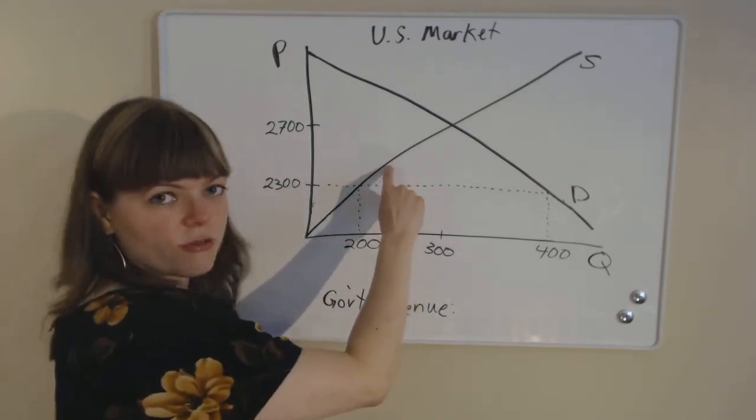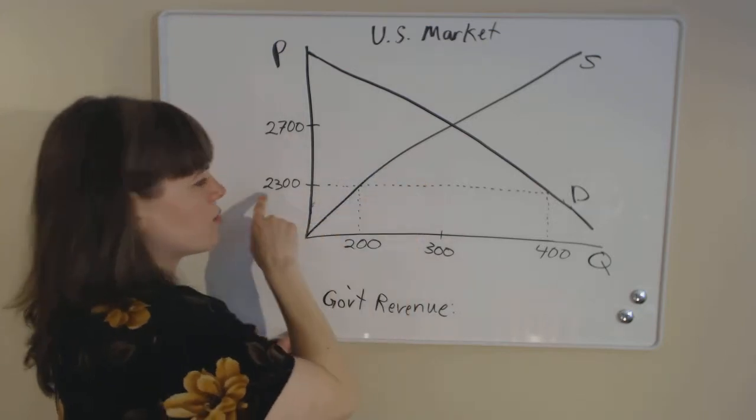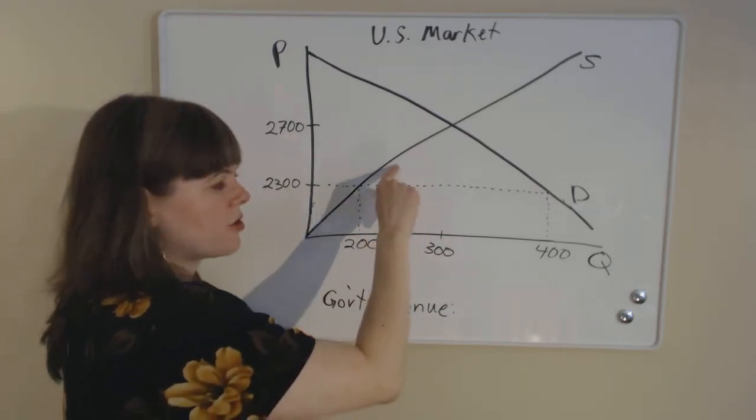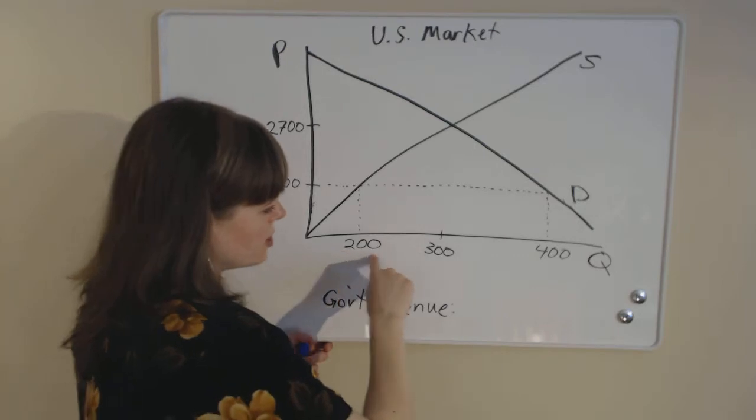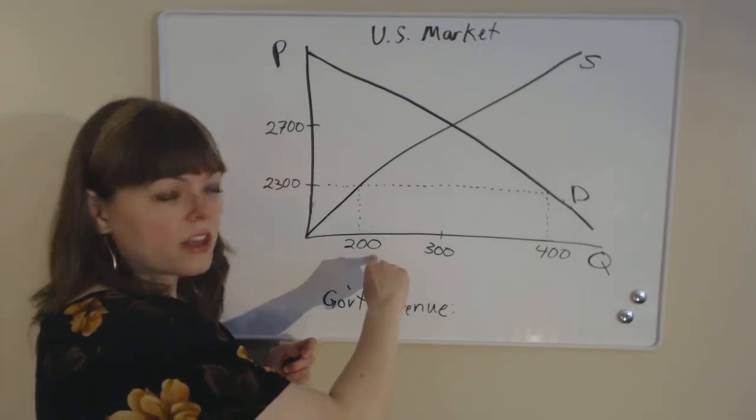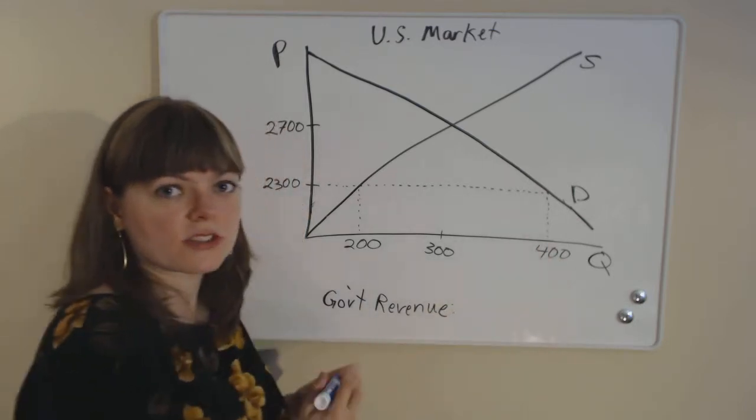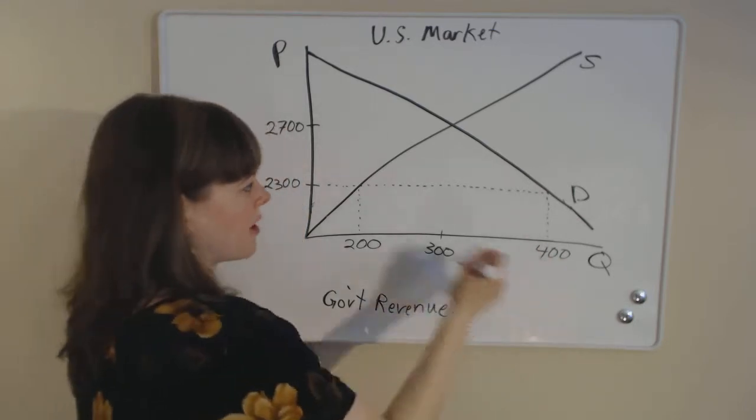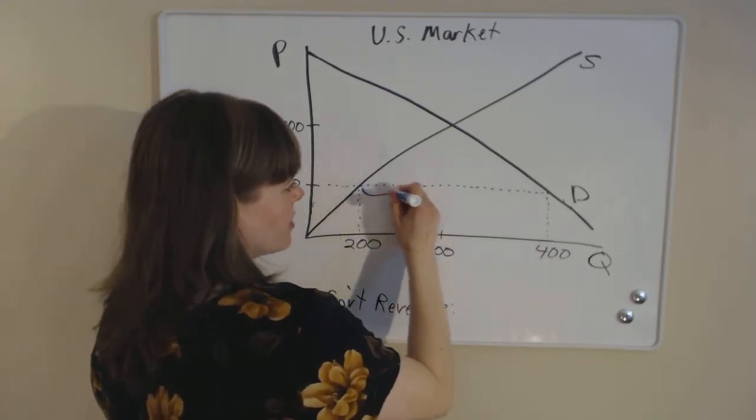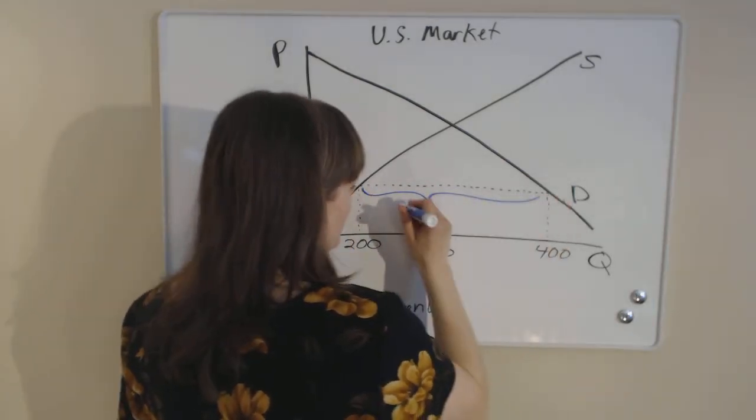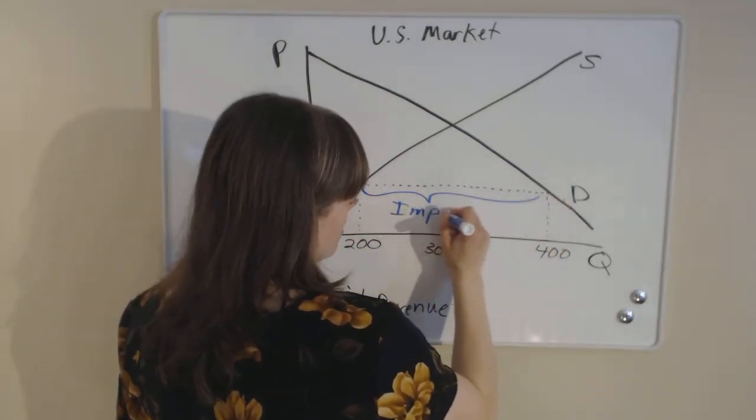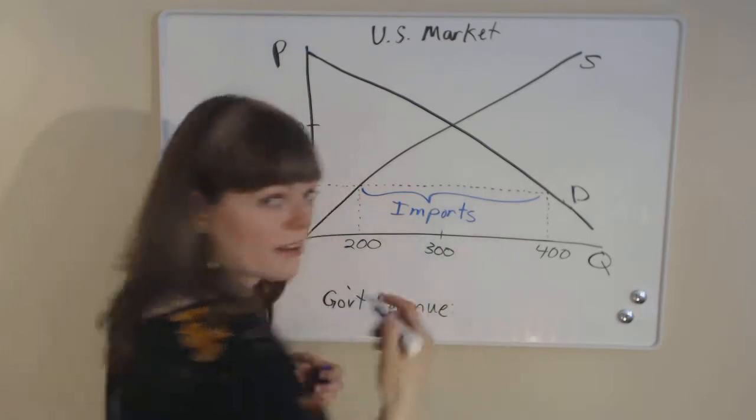However, this producer right here, it costs them more than $2,300 to make it, so this producer is not willing to produce. So we have 200 U.S. producers producing. We have 400 U.S. consumers consuming and buying the product, so that means the difference between the two is what we're going to bring in in imports. And that's the first question.